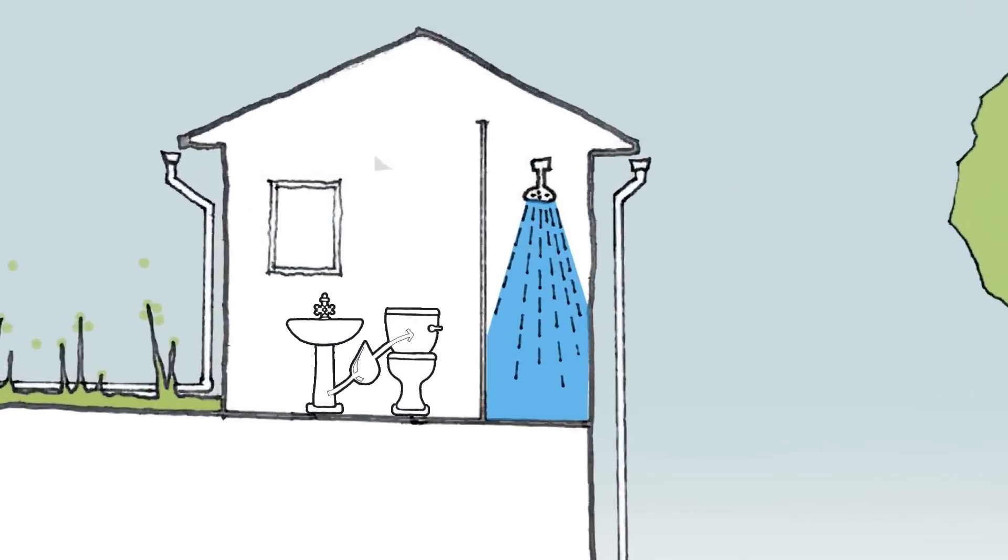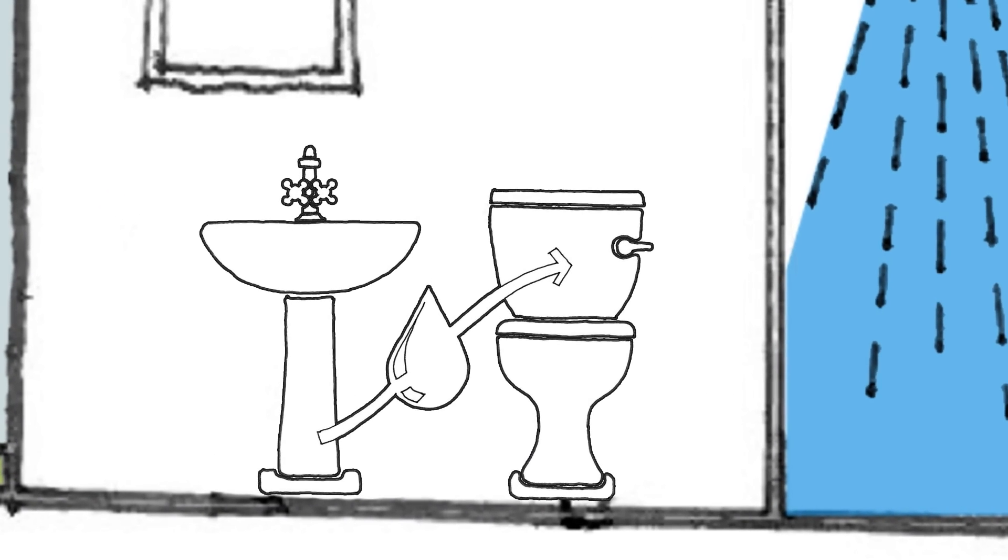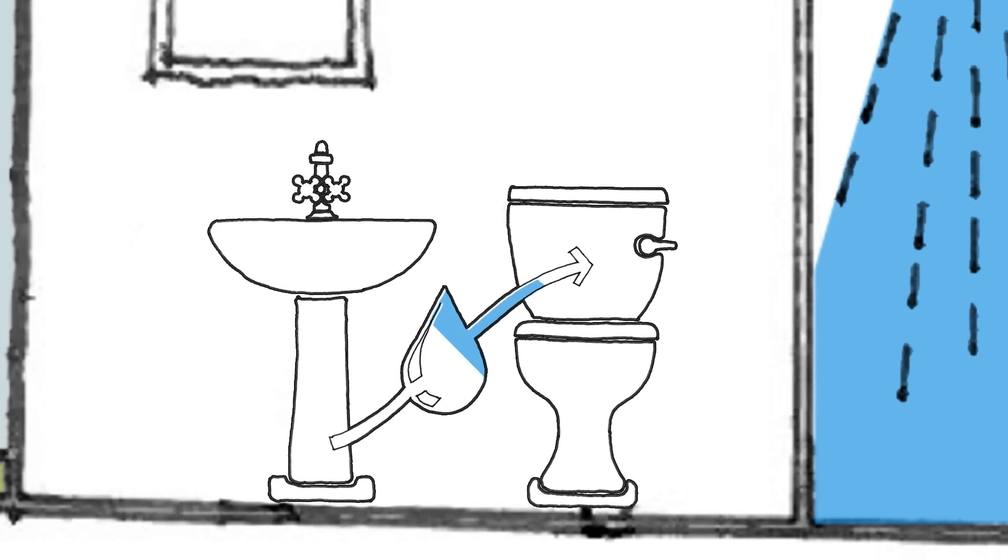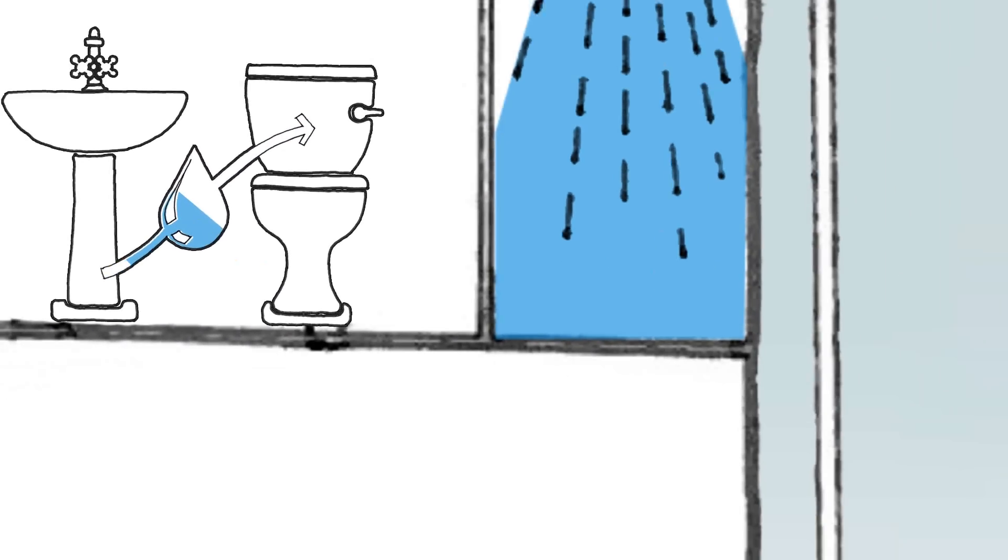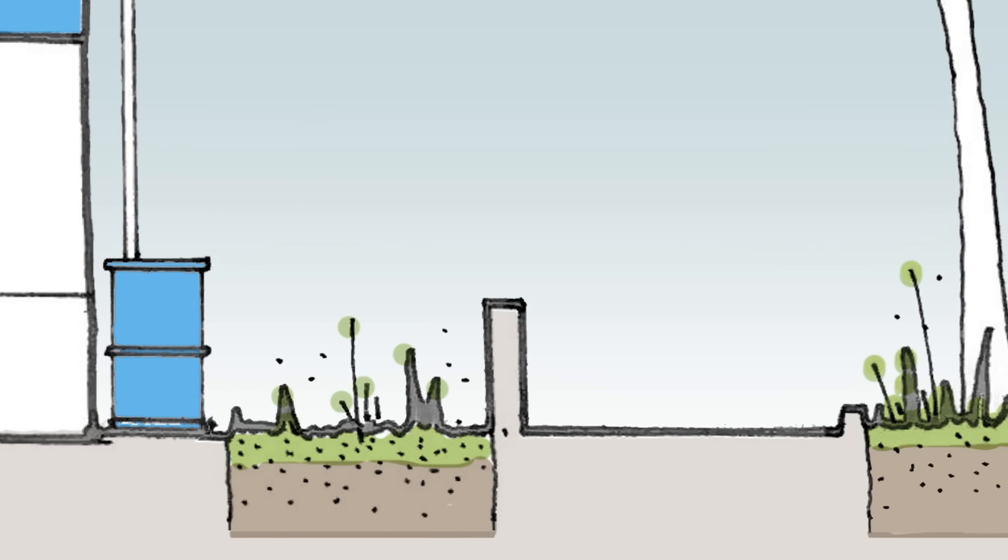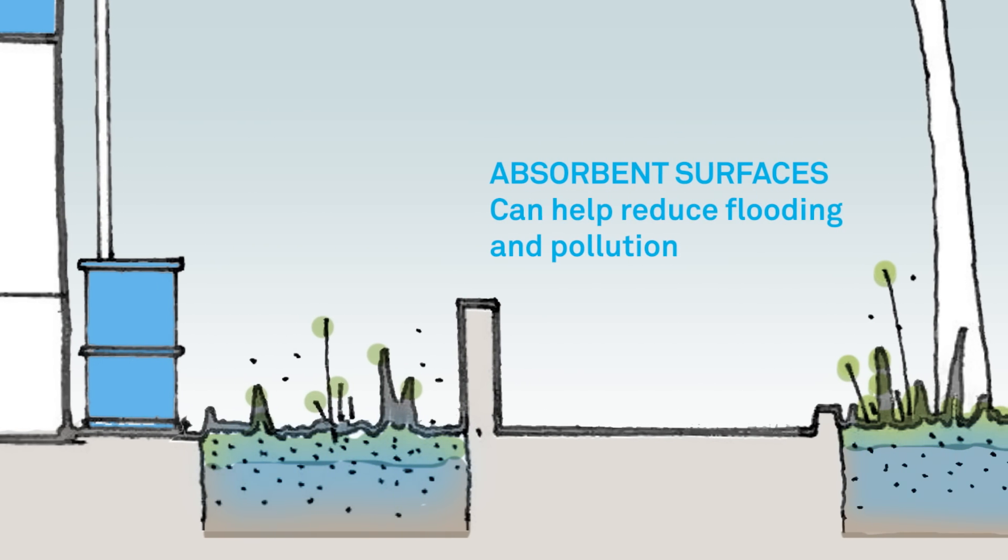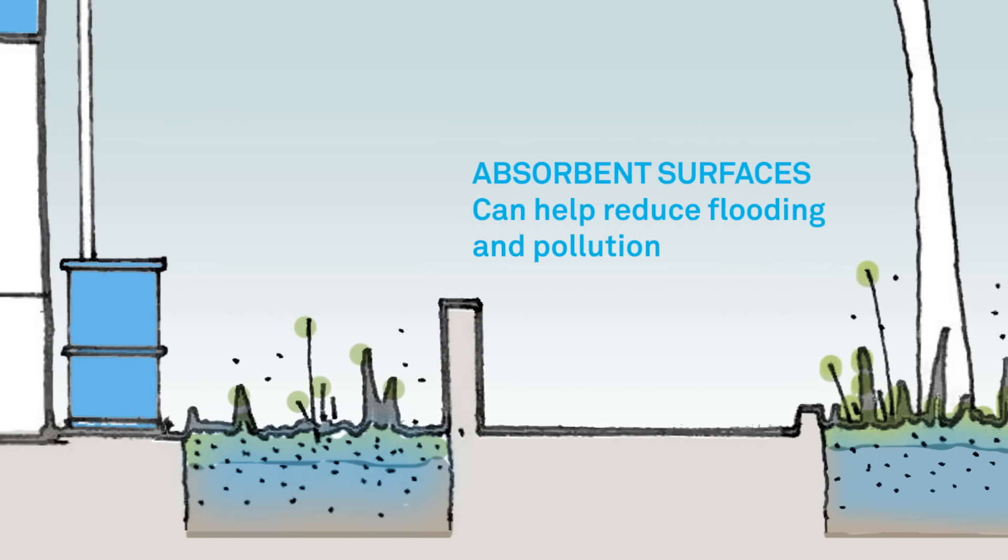Instead of letting water from the sink run away down the drain, we could use it to water our gardens or flush our toilets. If we use surfaces that absorb rainwater instead of standard paving, it can help reduce flooding and pollution.